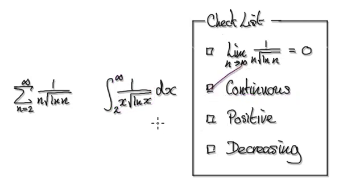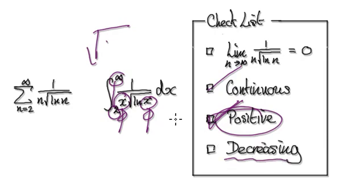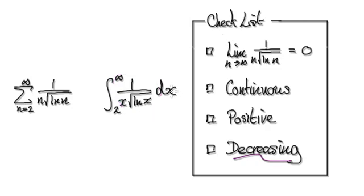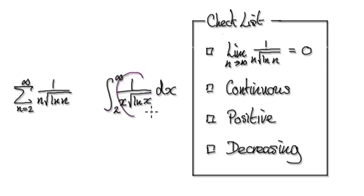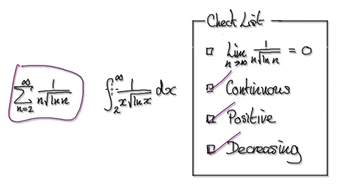Good. Is it positive? From 2 to infinity, yes — it will be positive. This thing here will be positive, and the square root is positive. So yes, it is always positive. And is it always decreasing? We've established that the denominator keeps on growing as you head towards infinity. So if the denominator keeps growing, then the overall thing will keep getting smaller and smaller. Yes, it will decrease. So all three conditions are satisfied — this is good.